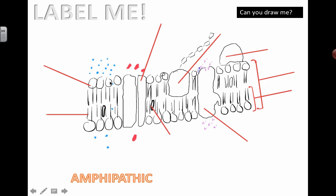For more information about the actual structure, what these things actually do, what amphipathic means and how that contributes to the stability of the plasma membrane, check out some of the other videos. But this is just a quick labeling thing. So you're going to draw a bunch of these lollipops and you're going to draw some large protein things that go all the way through, and some that don't go all the way through.